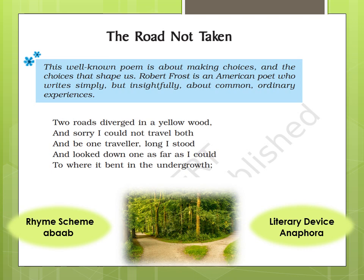The literary device present in this stanza is anaphora. Anaphora is when a word comes again and again repeatedly at the beginning of lines. Here you can see: 'and sorry I could not travel both', then 'and be one traveler long I stood', then 'and looked down one as far as I could'. Lines two, three, and four all start with the word 'and'. This repetition of 'and' at the beginning of consecutive lines is the literary device anaphora.